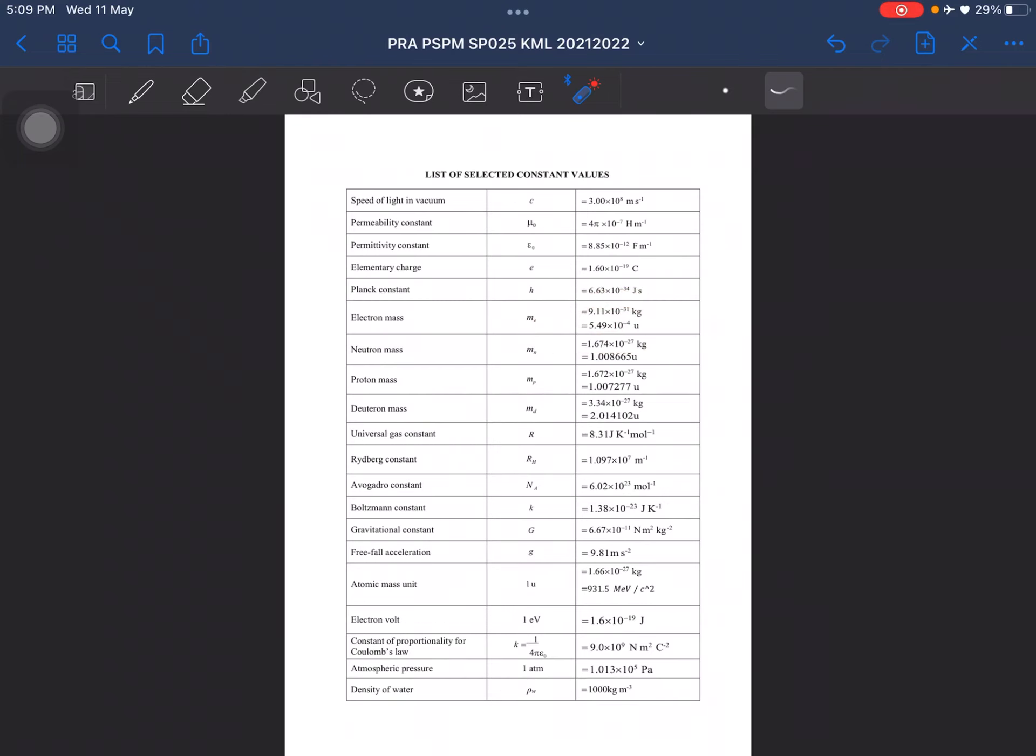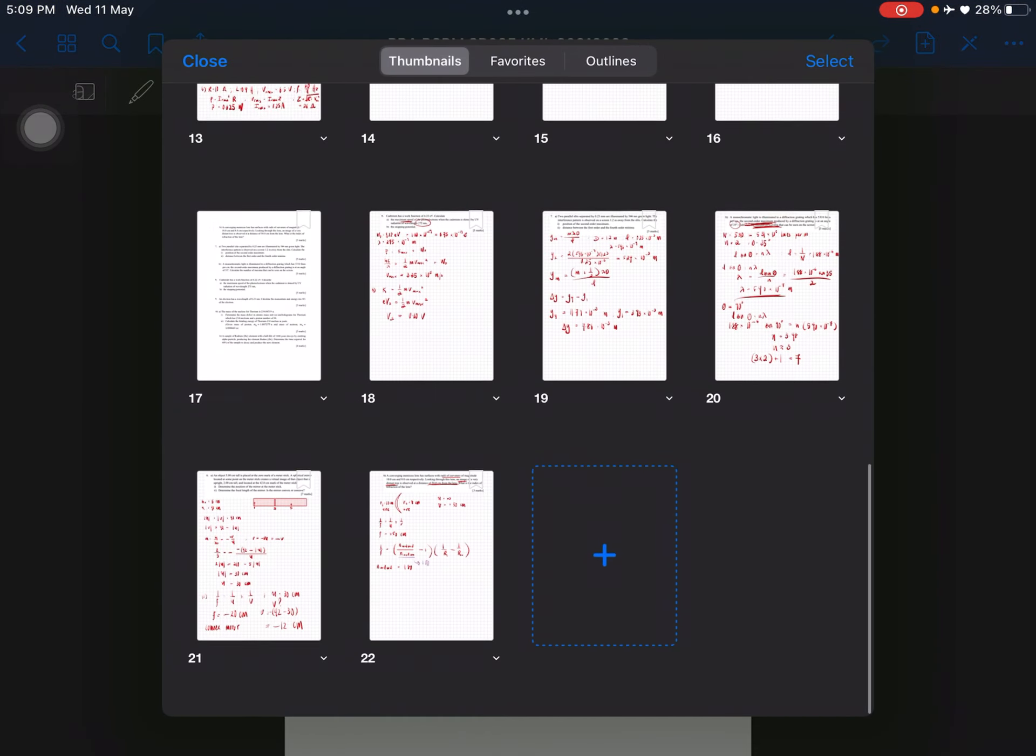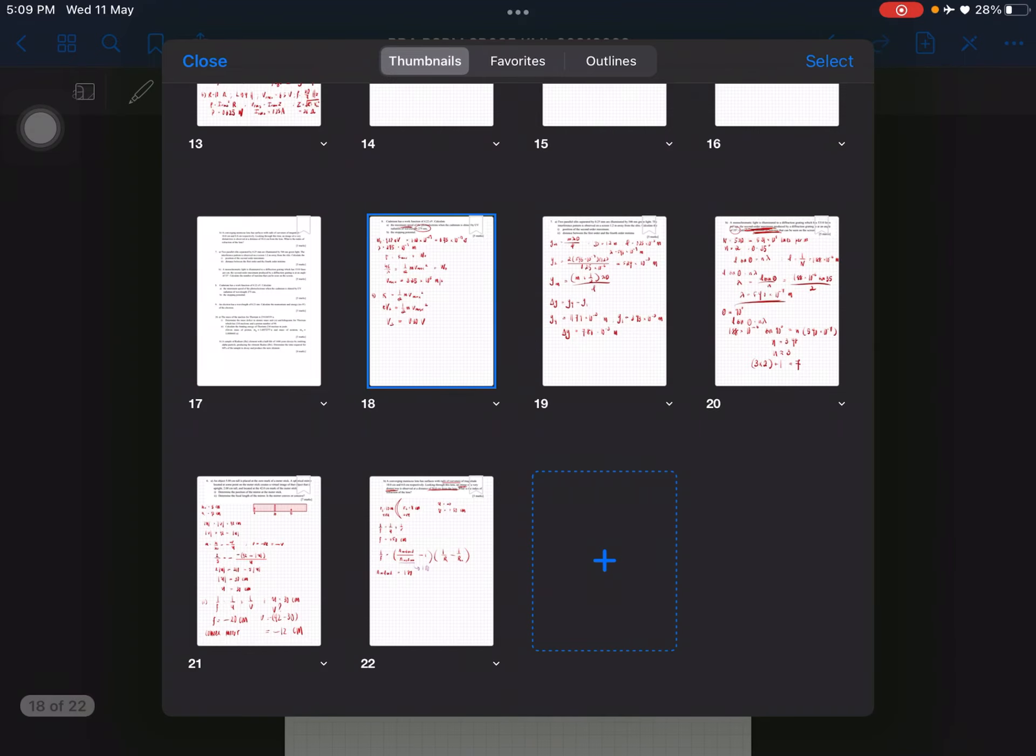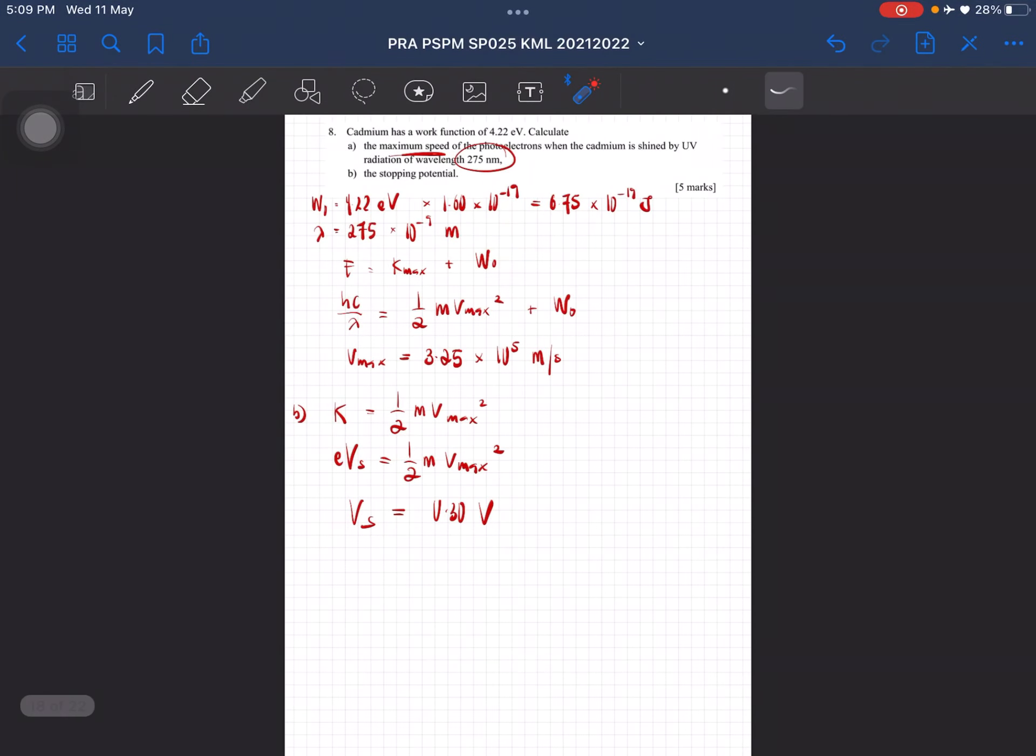I forgot, I thought 1.6 times 10^-19 is the mass of the electron, but this is actually the charge. So the mass of the electron is given here. Okay, so don't get confused like me. Alright, so that is question 8, and this is for chapter 9.